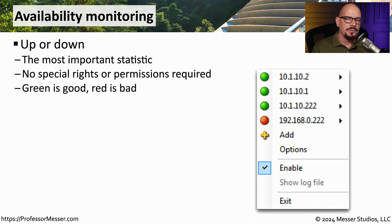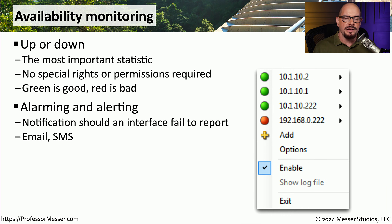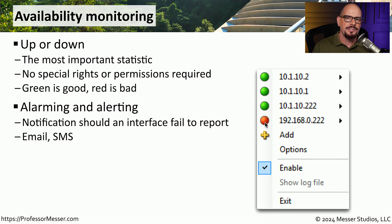Sometimes the most important statistic is simply whether a device is up or down. We can find this information by looking at our availability monitoring. This provides us with green for up and red for down, so we can instantly see where a device may be active or no longer on the network. This can also be rolled into a set of alarms and alerts, so we can constantly monitor these devices and, if any one turns red, instantly send email messages, open help desk tickets, and send alarms to the people that can solve the problem.